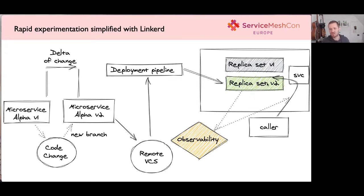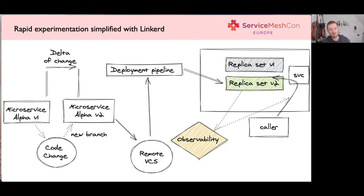If there's a regression, we have to go back to the drawing board and figure out what that regression is — that could be latency, that could be saturation, some other penalty we have to pay. The point is that the cycle is fairly long and it's extremely arduous to do across multiple versions, because that's just comparing V1 to V2. We should be able to compare V1 to V3 and V3 to V2 simultaneously.